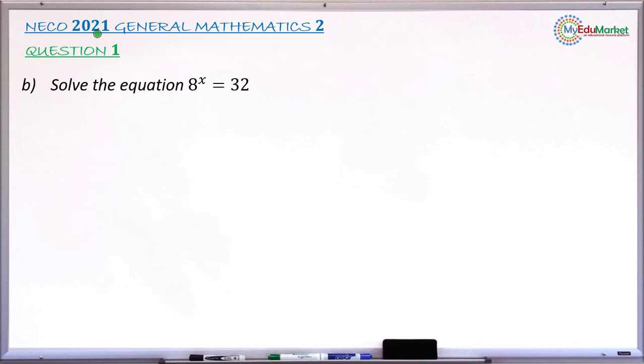This is NECO 2021 General Mathematics Paper 2, question 1b. The question asks to solve the equation 8 raised to the power of x equals 32. This is an equation involving index numbers, so let's attempt to answer this question to get a solution to the problem.